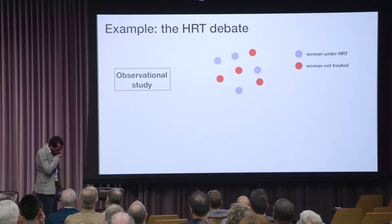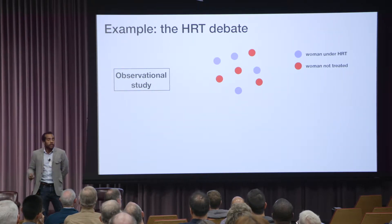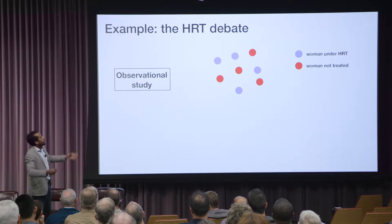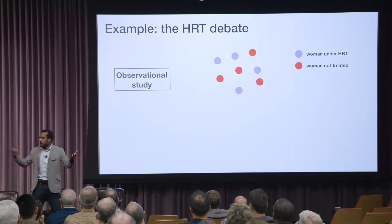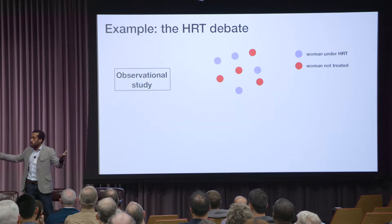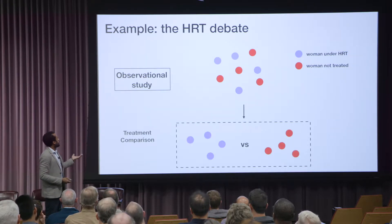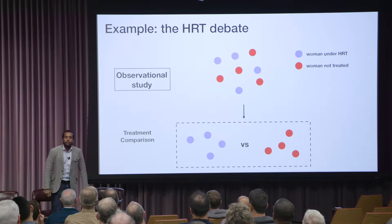Now, those of you who've worked in biological science or anything — 35% is a lot, it's very, very large. So that was in the published papers. What do they mean by observational evidence? Well, you just go around and find some women who are taking hormone replacement therapy and some women who are not, and then you compare them.